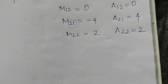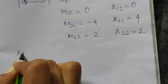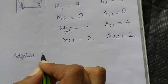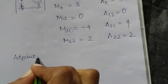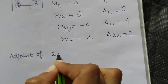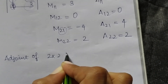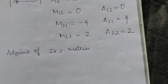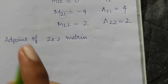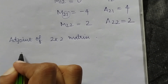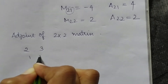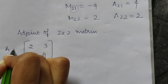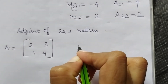The next topic is adjoint of a matrix. The adjoint of a 2 by 2 matrix is very easy compared to a 3 by 3 matrix. Let's take an example matrix A. The adjoint of A for a 2 by 2 matrix is found by interchanging the diagonal elements.